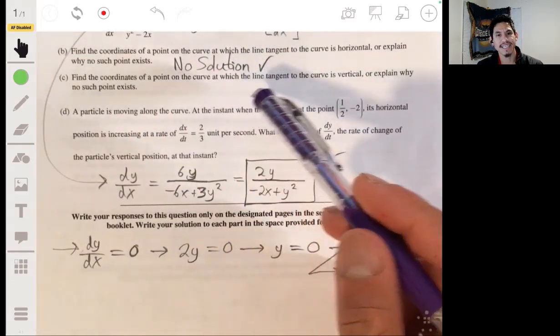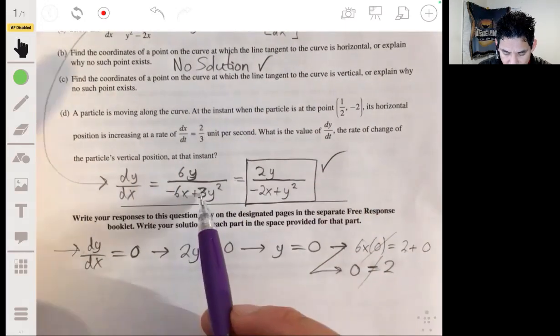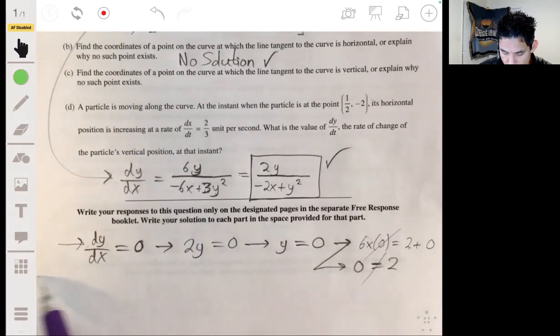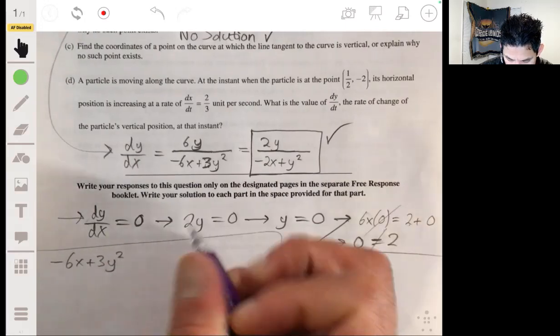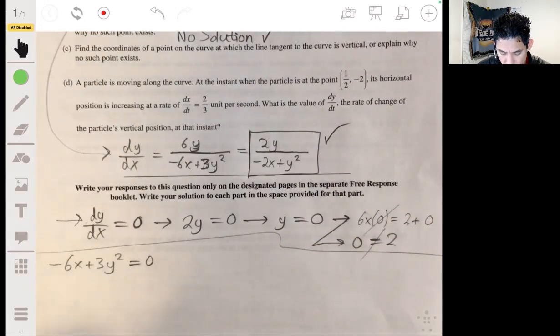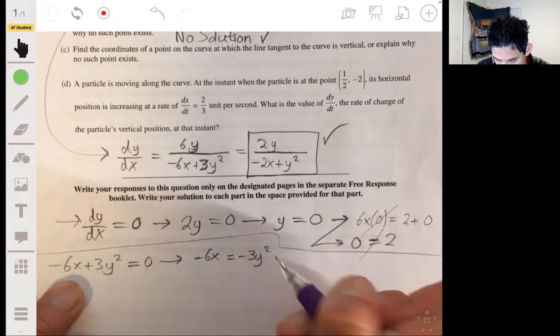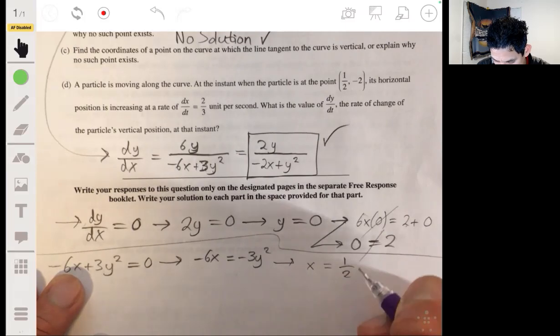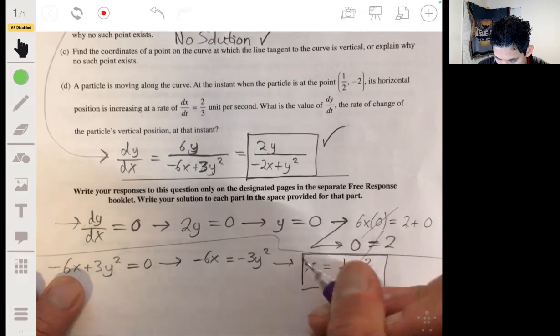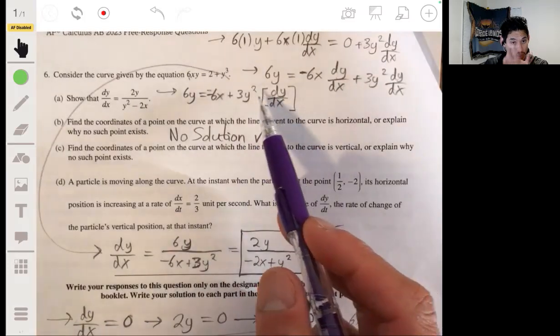All right, part C. Find the coordinates of a point at which a tangent line to the curve is vertical or explain why no such point exists. So this is where we have to find where the denominator of the derivative is undefined. So now in this case, we set negative 6x plus 3y equal to 0. Negative 6x plus 3y squared equals 0. Now let's solve this for just x. So we get negative 6x equals negative 3y squared. We get that x is equal to negative 3 over negative 6, or one-half y squared.